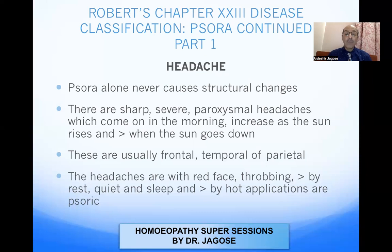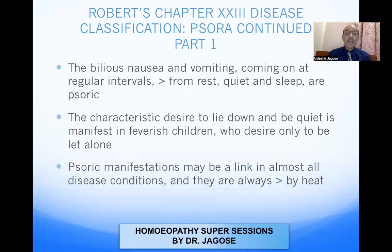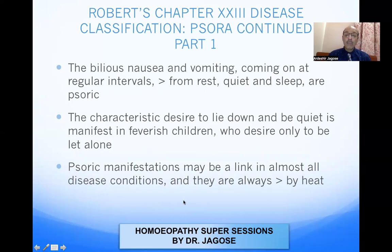The types of pain present in SORA are of great variety: sharp, shooting pain or paroxysmal and throbbing types. Bilious nausea and vomiting come on at regular intervals, better from rest, quiet, and sleep — again, SORIC manifestations. The characteristic desire to lie down and be quiet is manifest even in feverish children who desire only to be left alone. The important ameliorating feature of SORA is being better when lying down or being quiet.